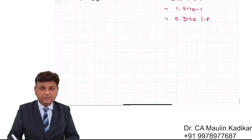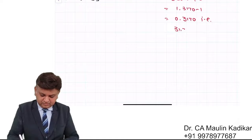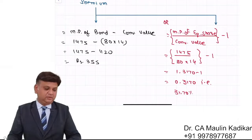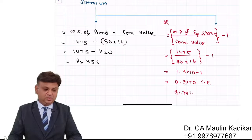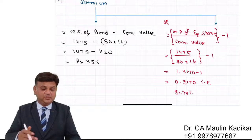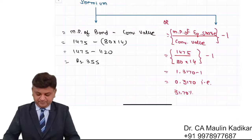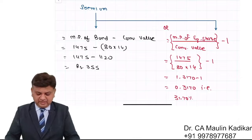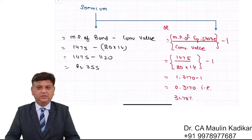31.70%. This is the premium over the conversion value or the stock value of the bond. Stock value means equity share value, that is how we can understand. Stock basically means security.